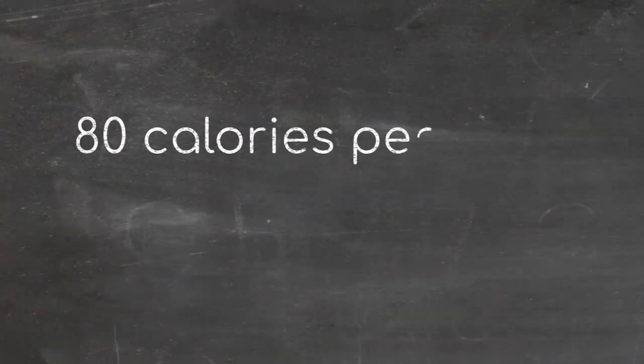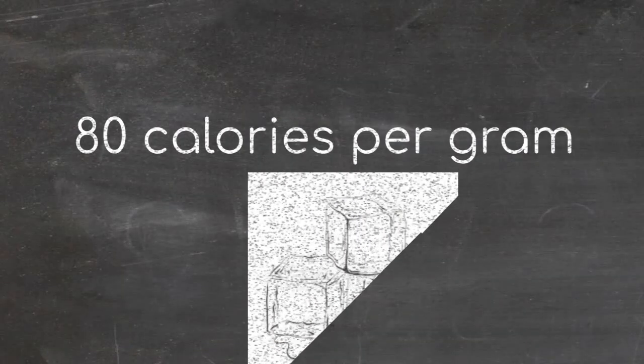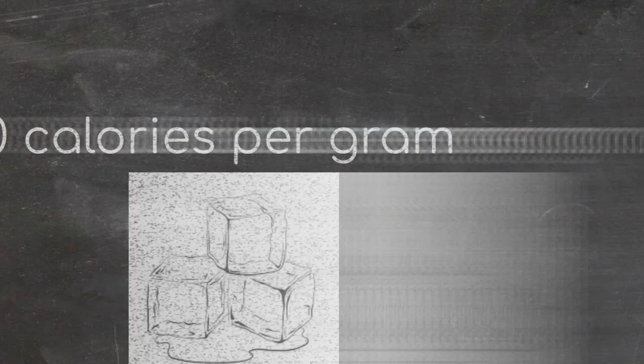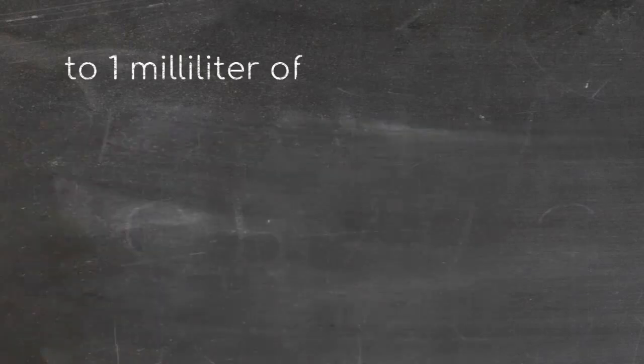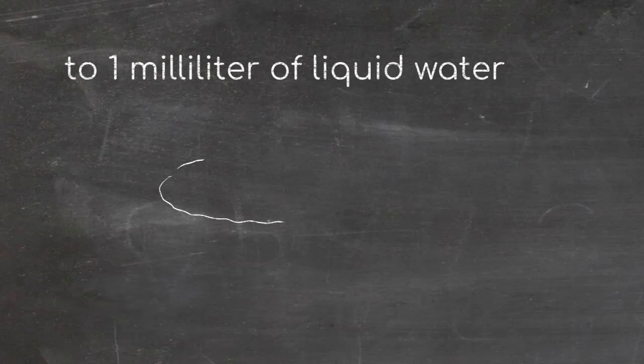About 80 calories of energy are needed to convert a gram of solid ice into a milliliter of liquid water. Once all the ice is melted, all the energy that was going into melting ice instead warms the water.